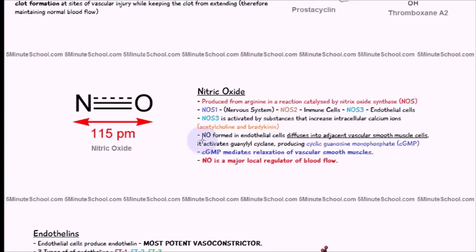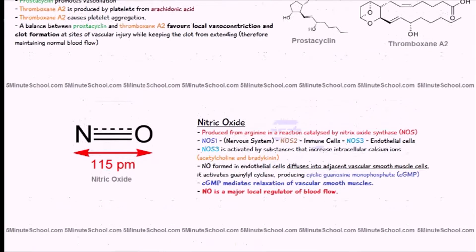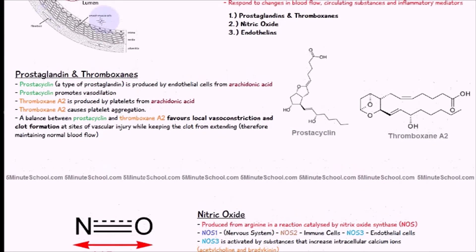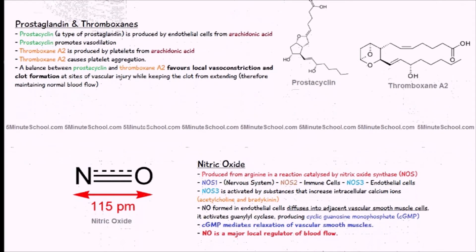Nitric oxide itself is what causes vasodilation. It's formed in the endothelial cells and once formed, it diffuses out into the smooth muscle. Here is the smooth muscle — they diffuse out of the endothelial cells into the smooth muscle and cause the activation of guanylyl cyclase, which then produces cyclic guanosine monophosphate, or cGMP.